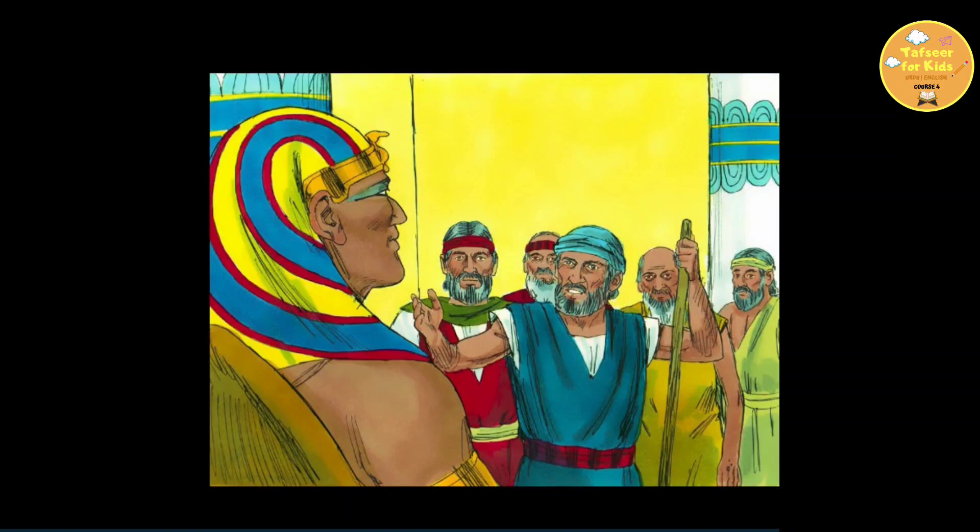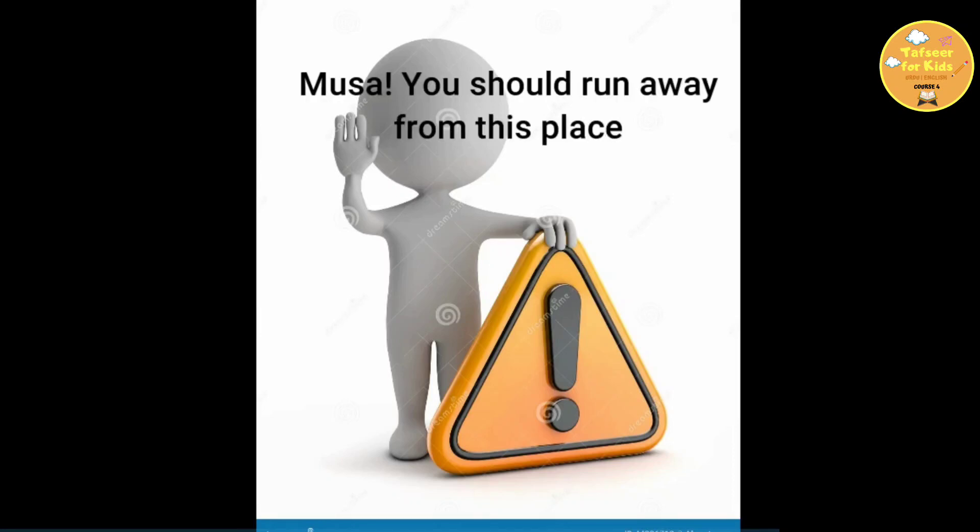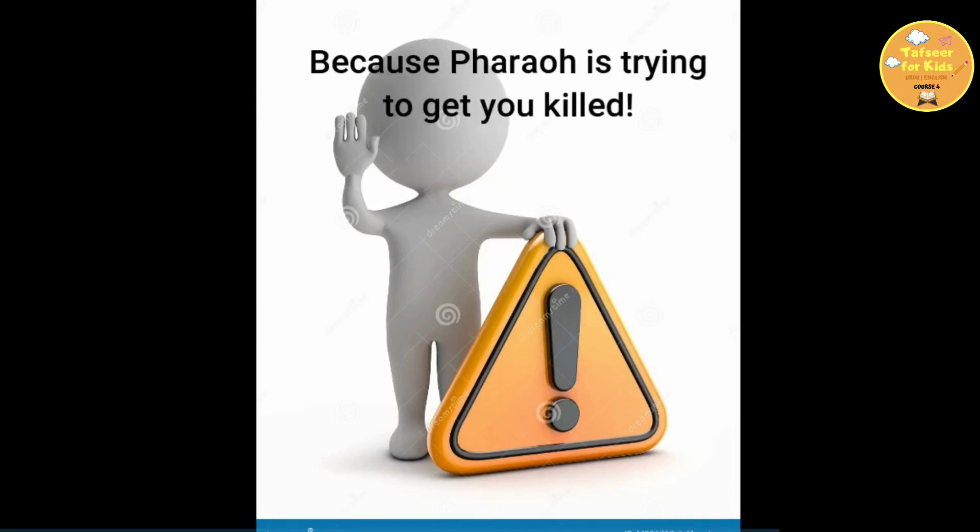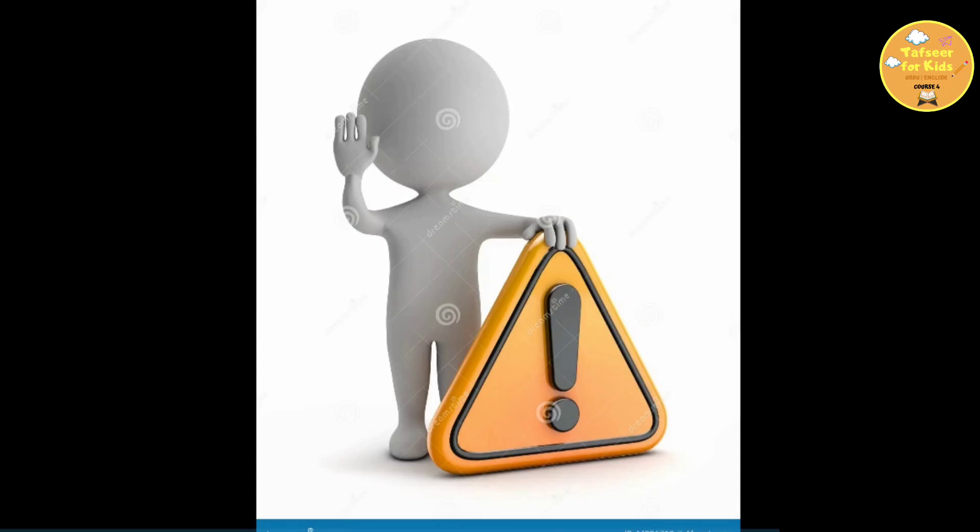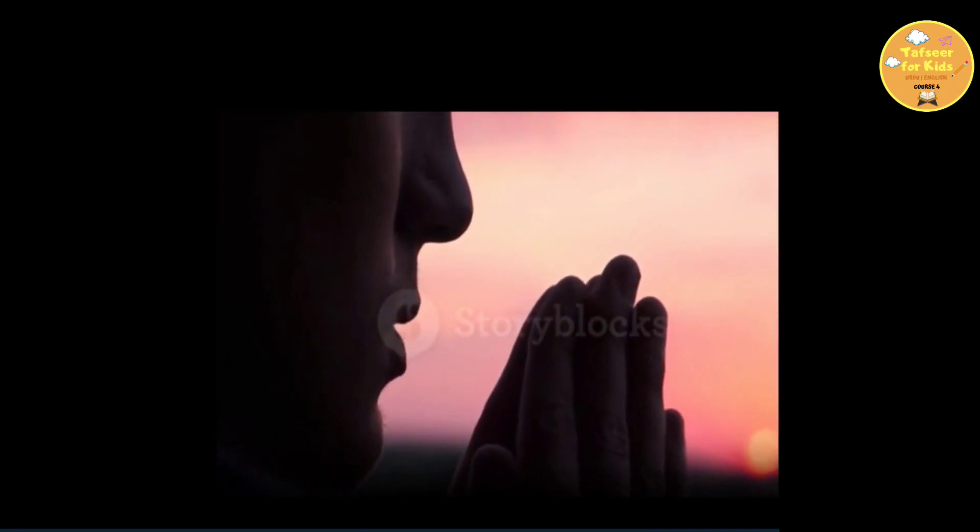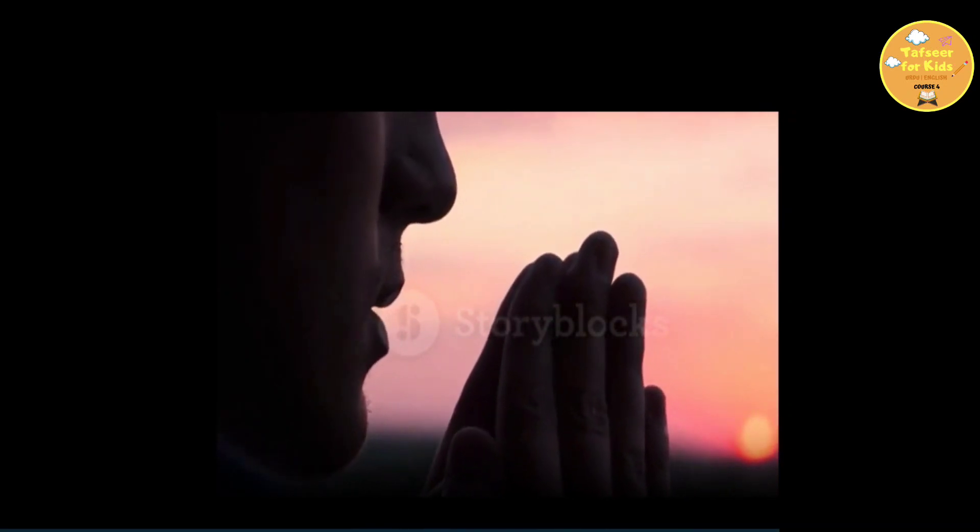So, Musa alayhi salam got scared and another man came and he said to Musa alayhi salam that Musa, you should run away from this place because Pharaoh is trying to get you killed in return. So, Musa alayhi salam without getting any food or clothes or shoes or any ride, he just started to run towards a direction. And he kept on making dua that Allah subhanahu wa ta'ala show me, guide me to the right place.